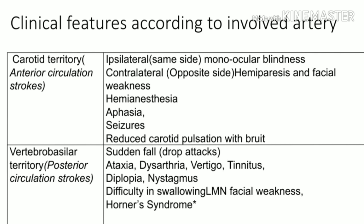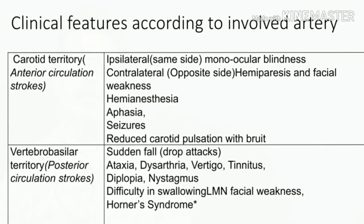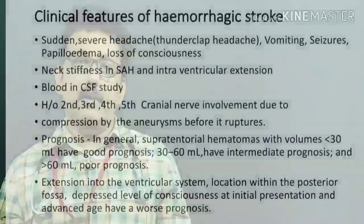In vertebrobasilar territory stroke, features include ataxia, dysarthria, vertigo, tinnitus, diplopia, nystagmus, difficulty in swallowing, facial palsy, Horner syndrome, and drop attacks with sudden BP fall. These are classic features of vertebrobasilar insufficiency.